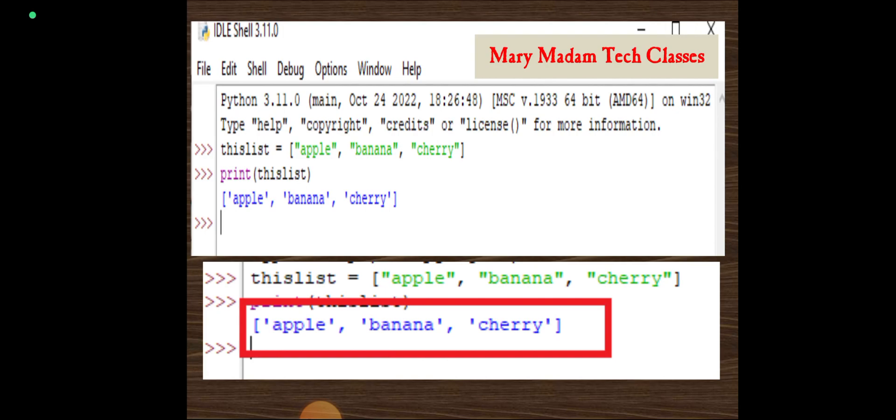Apple, banana, cherry. Give the enter key, then type print thislist as a variable. I am using the print function to display my list items. If I give enter key, the output will be appeared apple, banana, cherry. I gave the input in double quotations, but the output is displayed with square brackets and single quotes of elements.